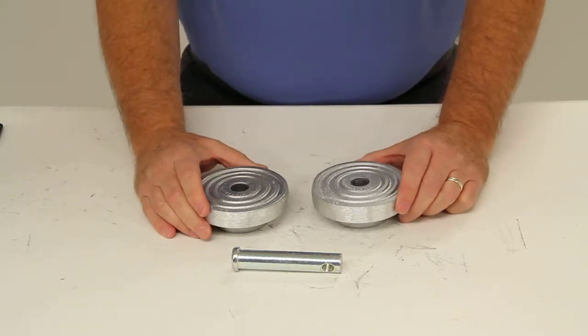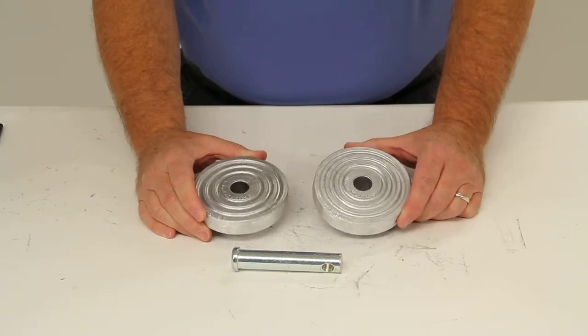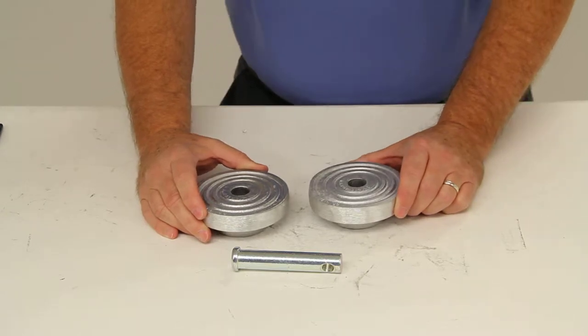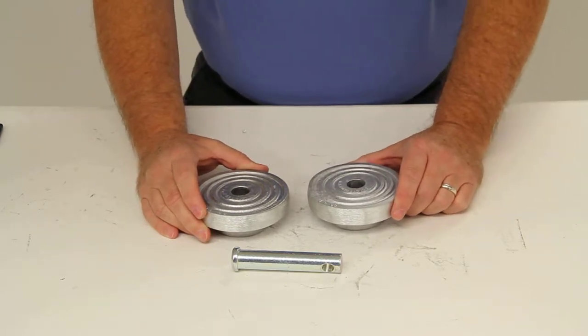Today we're going to review part number BLTL-60. This is the Blaylock Easy Lock Trailer Coupler Lock for lunette ring couplers.